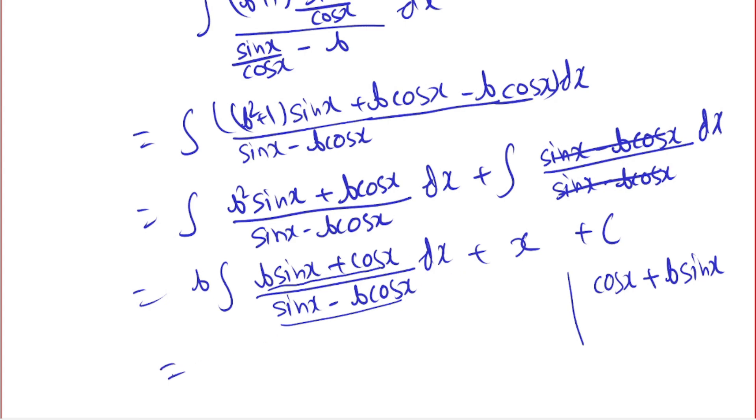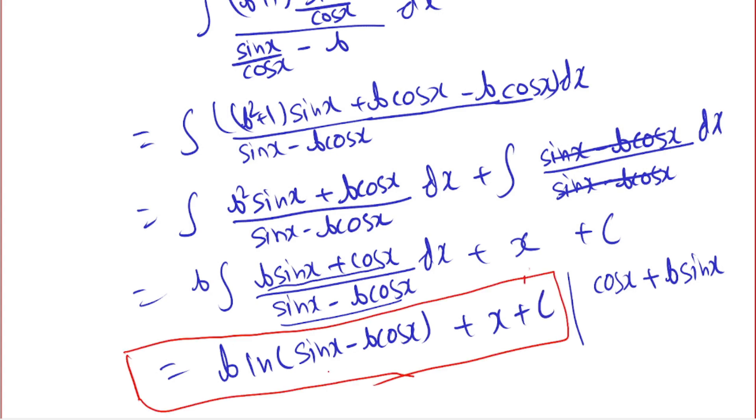So what we get is ln t. Okay, so we get ln of sine x minus b cos x, and here we have x plus c. Okay, and yeah, that's how you solve it. If you are new to my channel, please subscribe. See you next video with another problem.